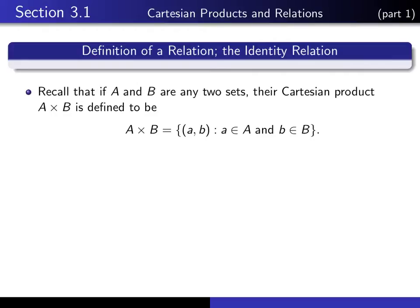Relations are defined in terms of Cartesian products, so let's recall the definition. If A and B are any two sets, we define their Cartesian product to be the set of all ordered pairs (a, b) such that a is an element of set A and b is an element of set B.